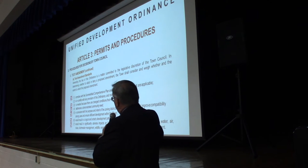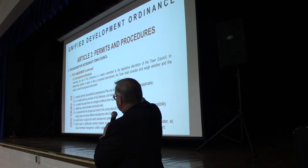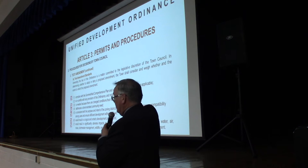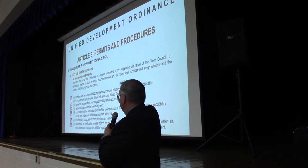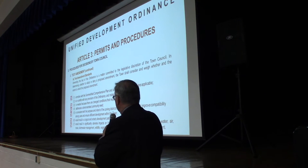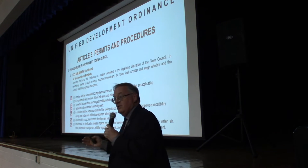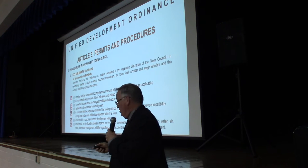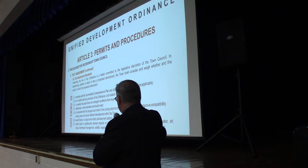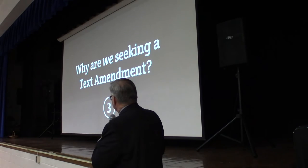The ordinance goes on to describe a set of factors that should be weighed in considering a text amendment. There's a list of them you can see. This is in Article 3, Part D, Subsection 3, under Text Amendments. There are seven things to consider, and all of those are addressed by our application.